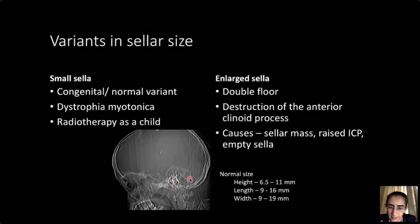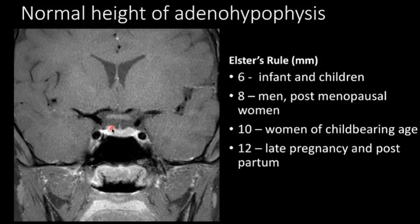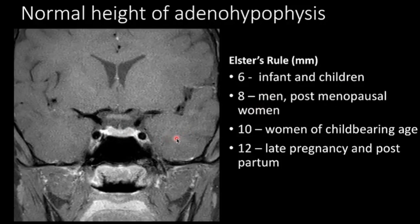The normal height of the adenohypophysis is measured on coronal images. The superiorly concave border is normal. The height should not exceed 6 mm in men and postmenopausal women, up to 8 mm in women of reproductive age, up to 10 mm in women, and in late pregnancy and the immediate postpartum period it may physiologically reach up to 12 mm.